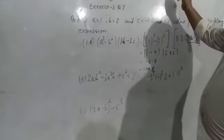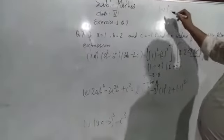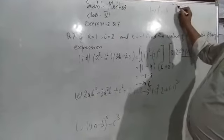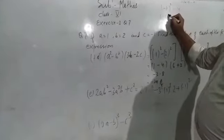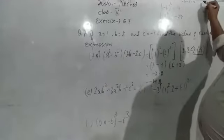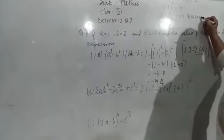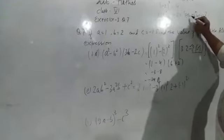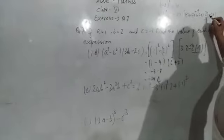One thing to remember: when the negative value's index is even, the answer is always positive. It means minus 2 squared means minus 2 into minus 2, which gives plus 4. And when the negative value's index is odd, the answer is always negative. So minus 3 cubed gives minus 27, because minus 3 into minus 3 into minus 3: minus minus is plus, 3 nines are 27, so the value is 27.